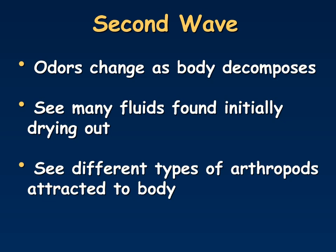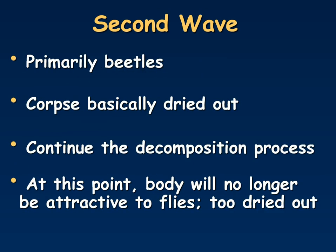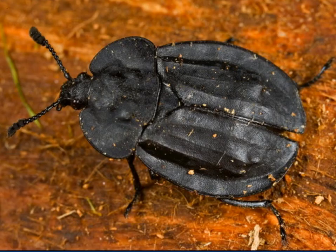Now we're going to discuss the second wave. During this part of decomposition, the odors are going to change as the body decomposes. Many of the fluids found initially are starting to dry out, and therefore different types of arthropods are attracted to the body. During the second wave, you're going to primarily see beetles. The corpse is basically dried out, and at this point the body will no longer attract flies because it's too dried out. Over the next few slides are examples of carrion beetles you may find at a body.